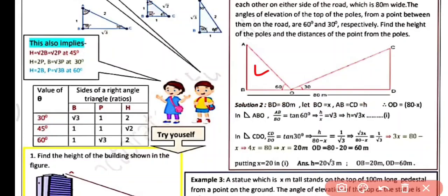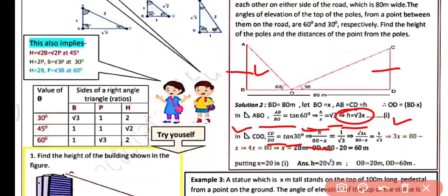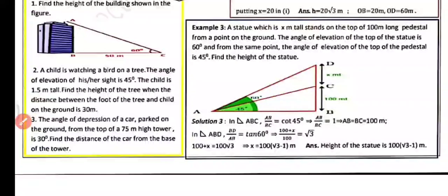In triangle ABO, AB/BO = tan 60°, so h/x = √3, giving h = √3·x (equation 1). In triangle CDO, CD/OD = tan 30°, so h/(80 − x) = 1/√3. Solving these equations gives x = 20 meters. Therefore OD = 60 meters, the distance from O to pole AB is 20 meters, from O to pole CD is 60 meters, and the height of the poles is 20√3 meters.